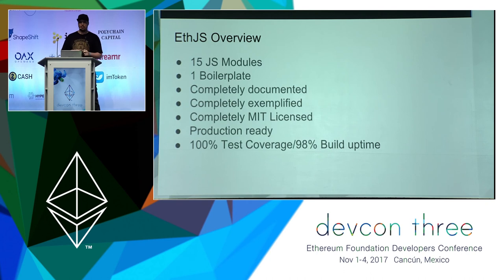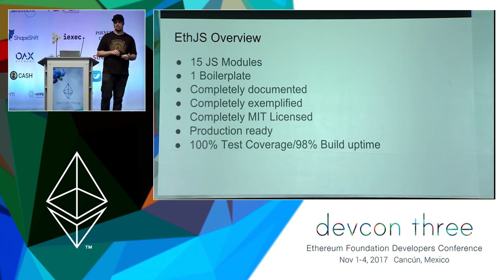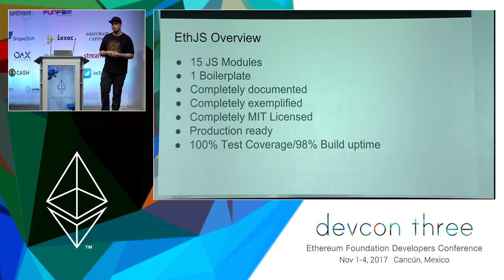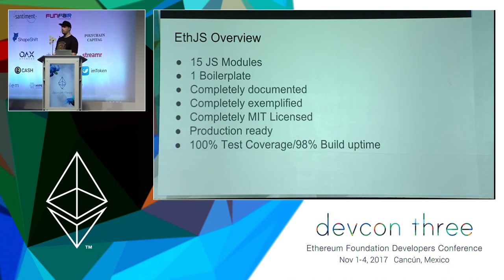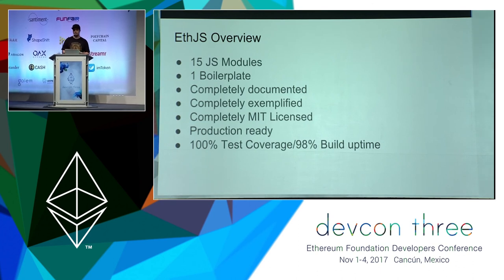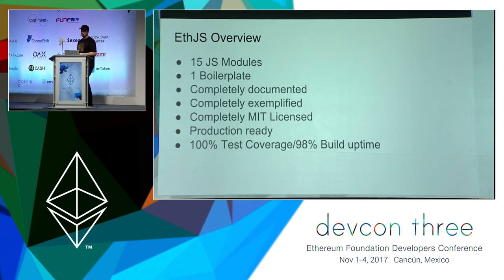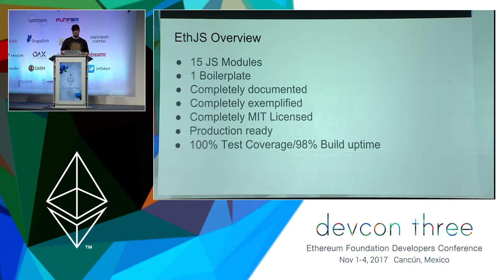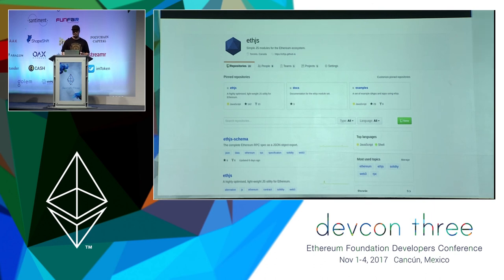ETH.js is a small organization that has a few modules — 15 in total — and we have one boilerplate and a few development tools, some command line stuff as well. Everything's fully documented, fully exemplified, and MIT licensed. It's production ready, with 100% test coverage and 98% build-up time as a general policy. It's on GitHub at github.com/ethjs and we've got 20 repositories.